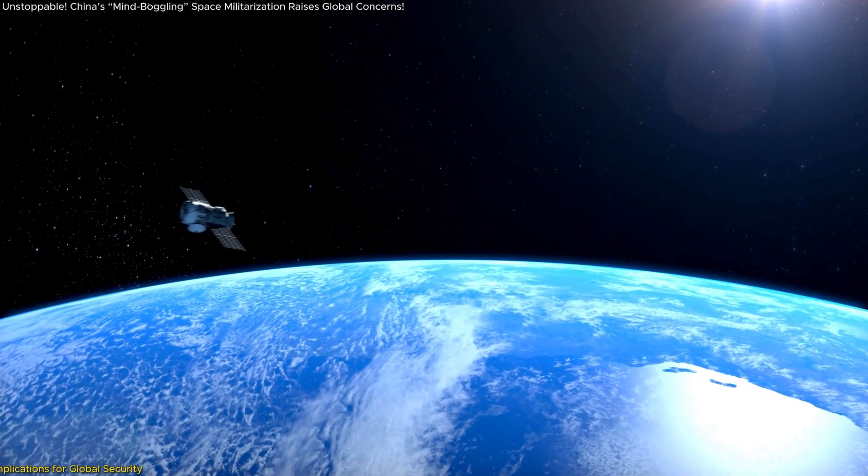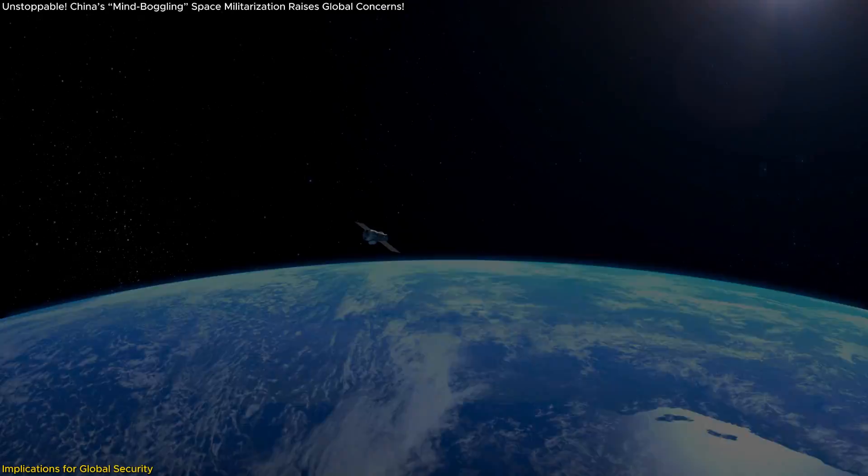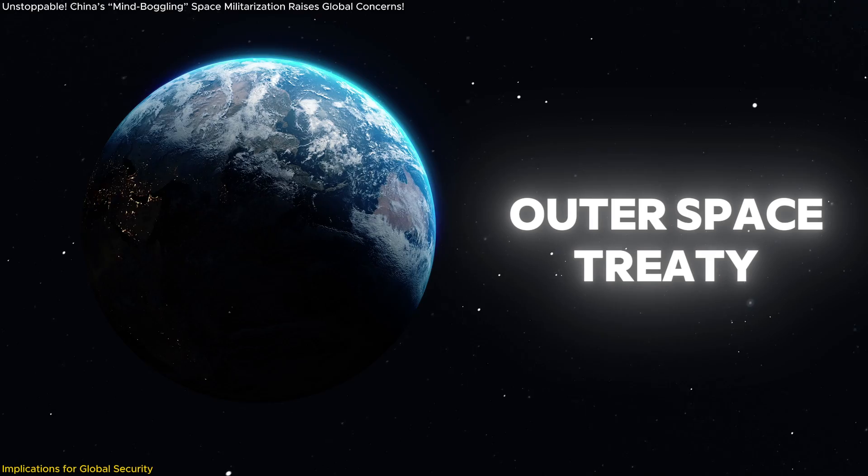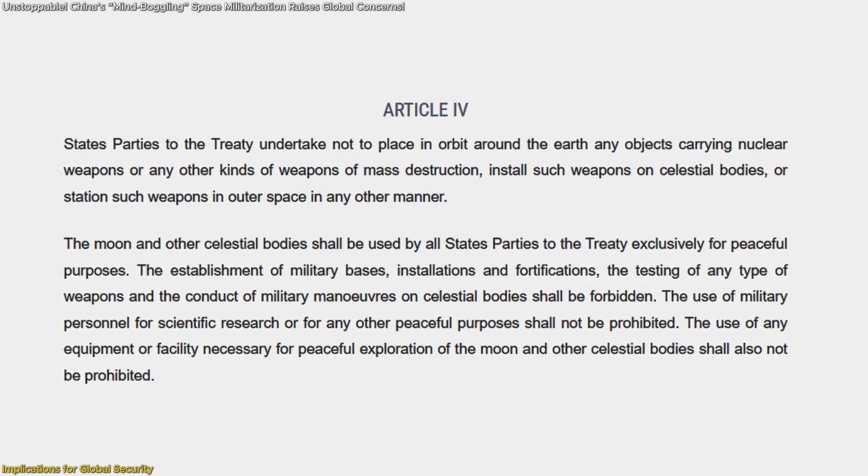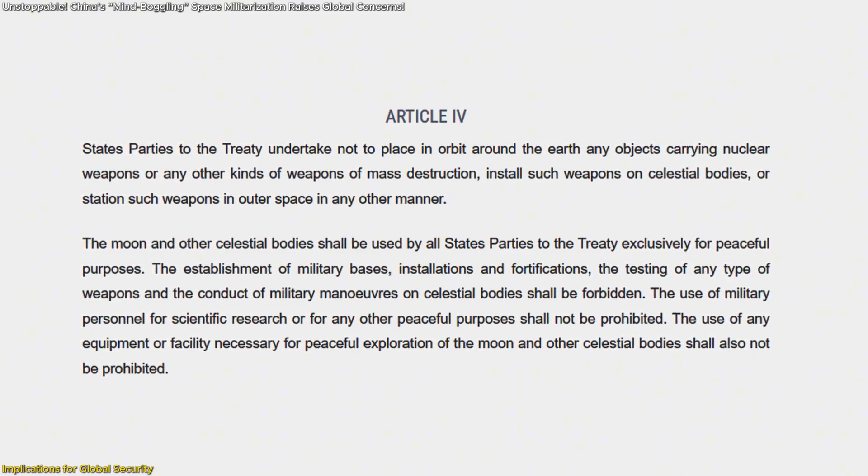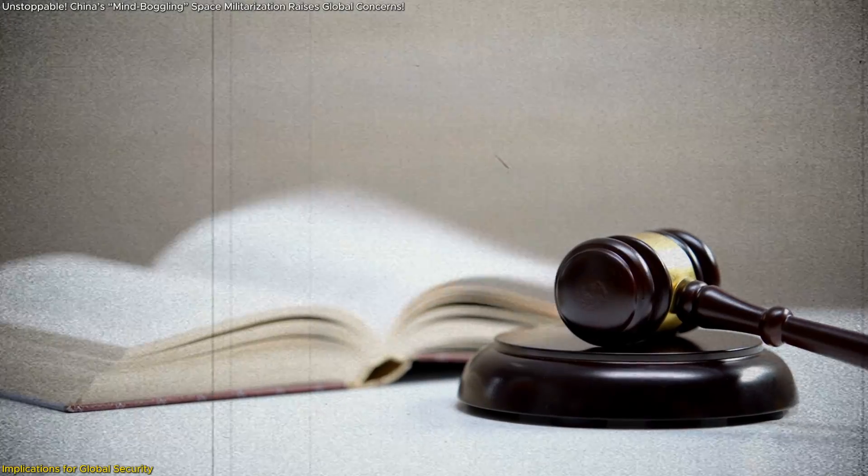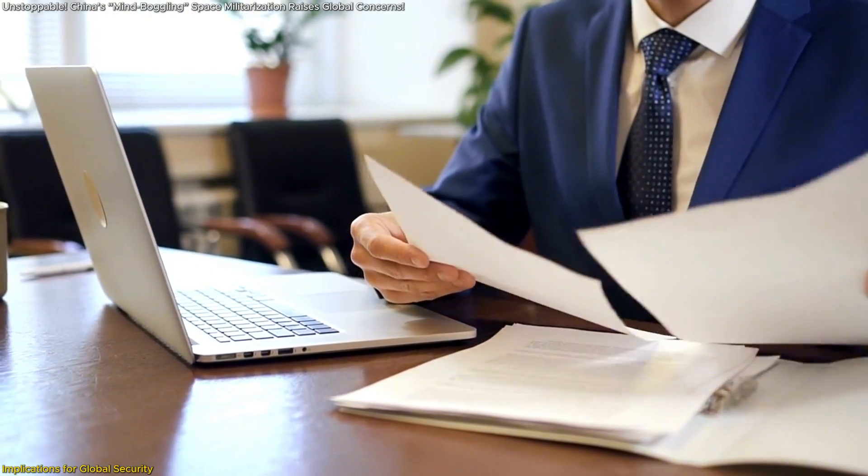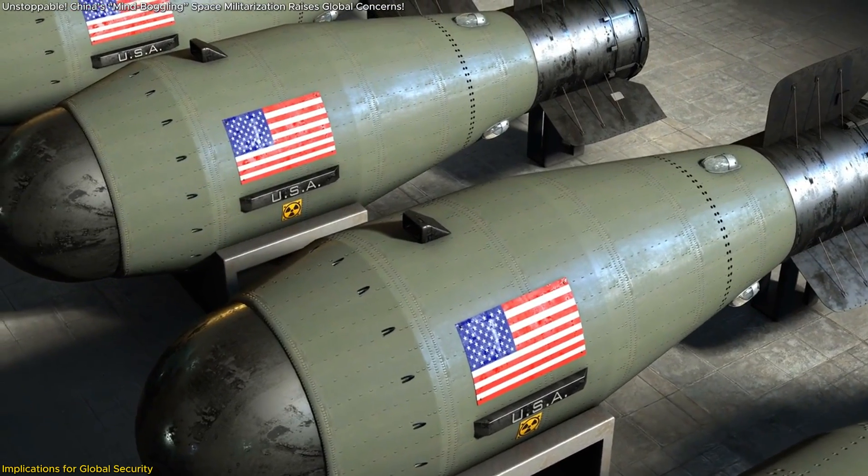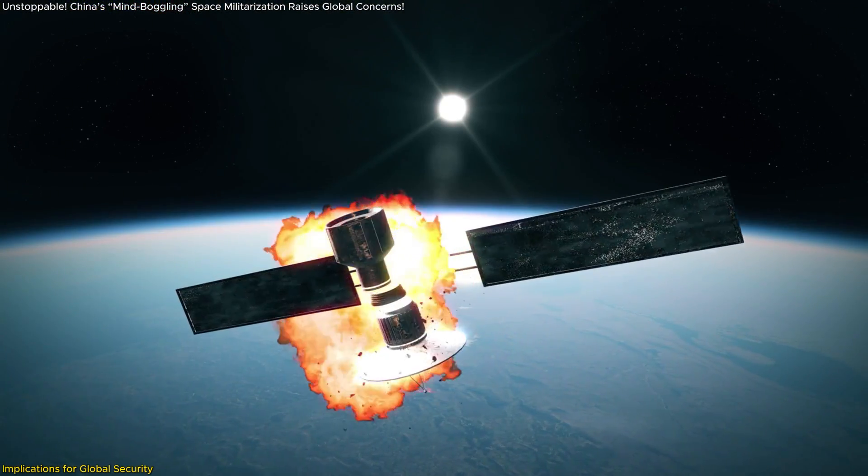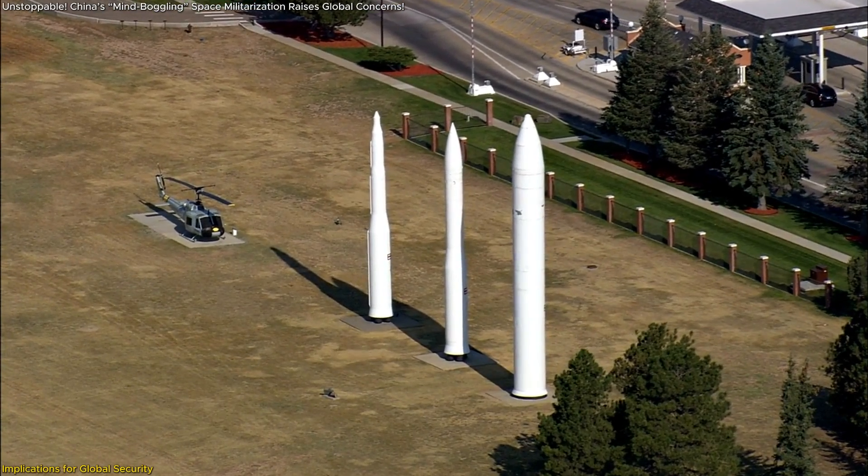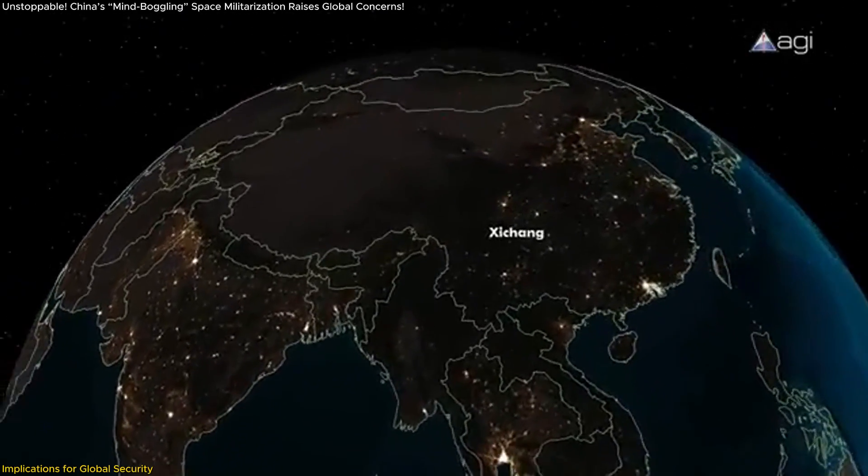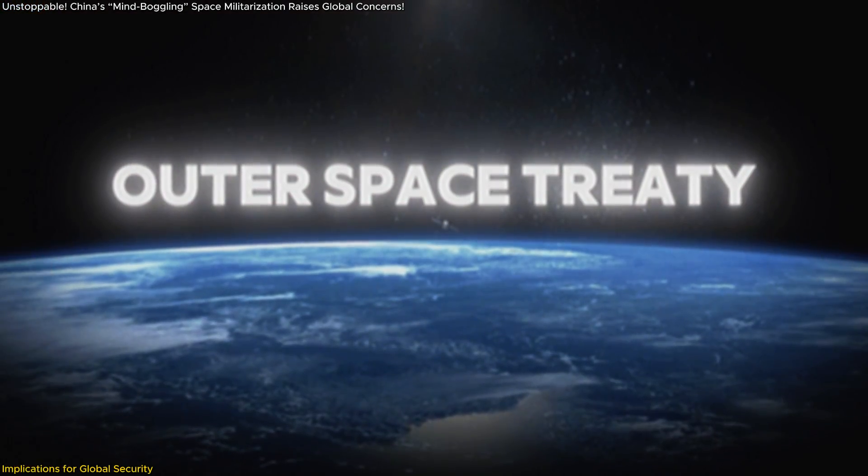The implications of China's actions in space are profound and far-reaching. At the heart of the concern lies the potential destabilization of global security. The Outer Space Treaty of 1967, which aimed to preserve space as a peaceful domain, prohibits the placement of nuclear weapons or other weapons of mass destruction in orbit. However, this treaty is outdated and vague, leaving room for interpretation that China appears willing to exploit. For example, while the treaty bans WMDs, it says nothing about anti-satellite weapons or non-nuclear technologies that could wreak havoc in space. China's advancements, such as lasers capable of blinding satellites or kinetic kill vehicles that destroy targets on impact, technically don't violate the treaty but undermine its spirit.